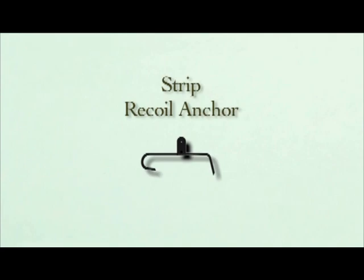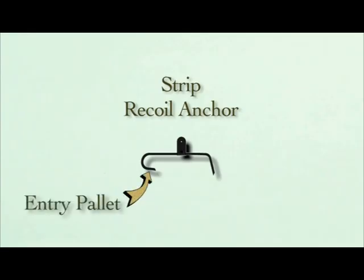There are three distinguishing features that help identify a recoil escapement. First, the anchor is asymmetrical, which means the entry and exit pallets have distinctly different shapes. The strip version of the recoil anchor looks much like an unfolded paper clip. The entry pallet is shaped like a hook. The exit pallet is a simple angle, somewhere around 90 degrees.